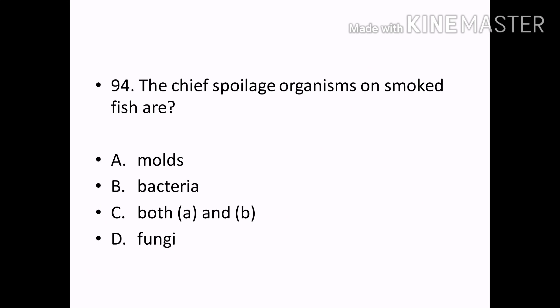The chief spoilage organism on smoked fish are: Options — Molds, Bacteria, Both A and B, Fungi. Correct answer: Option A — Molds.